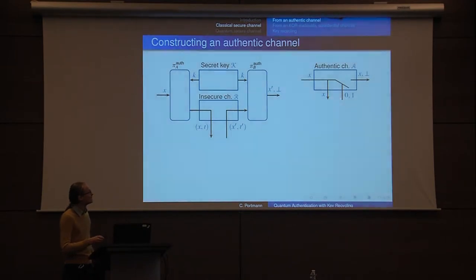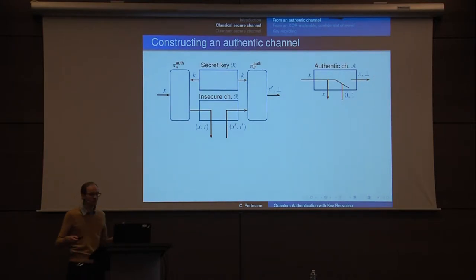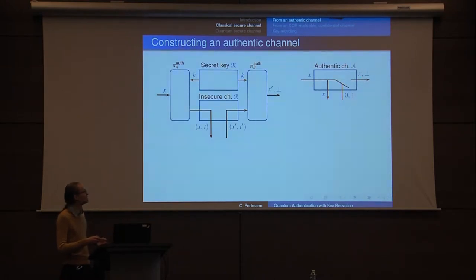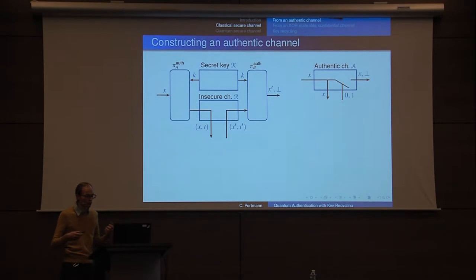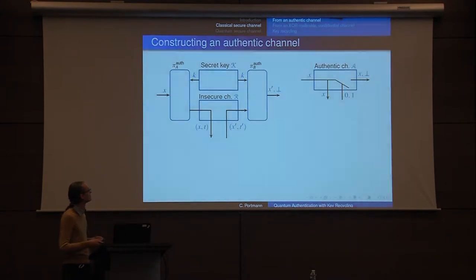What we actually want is to construct an authentic channel. Here's a more formal version: whatever Alice puts in, Eve gets a copy, and Eve can actually input a bit — 0 or 1 — to decide if Bob is going to get the message or not. The authentic channel I showed earlier cannot be achieved because Eve can always jumble the communication, so Eve always gets to decide if Bob gets the message or not.